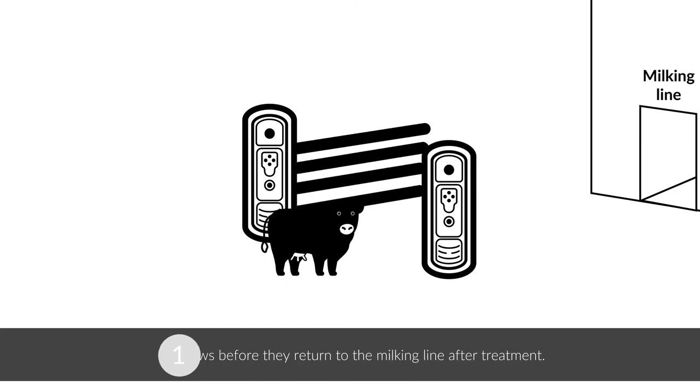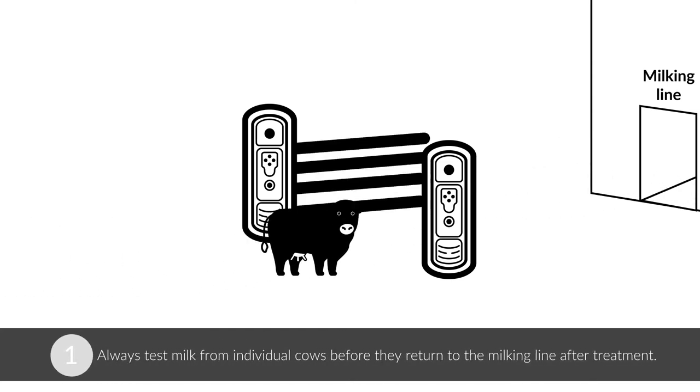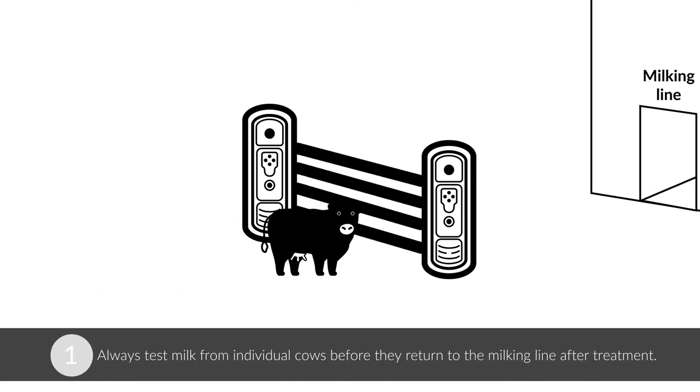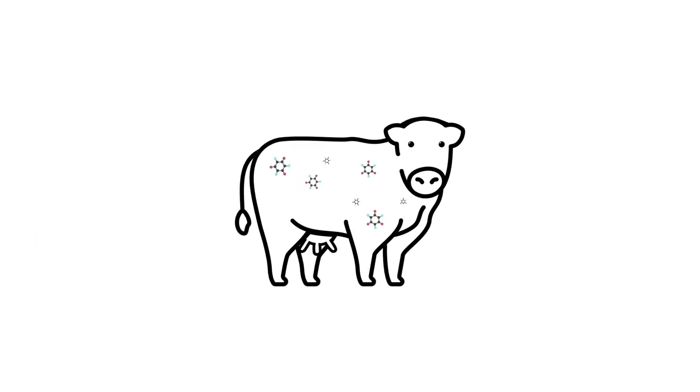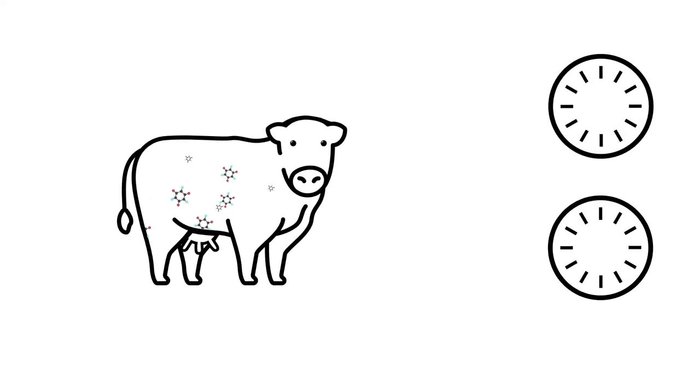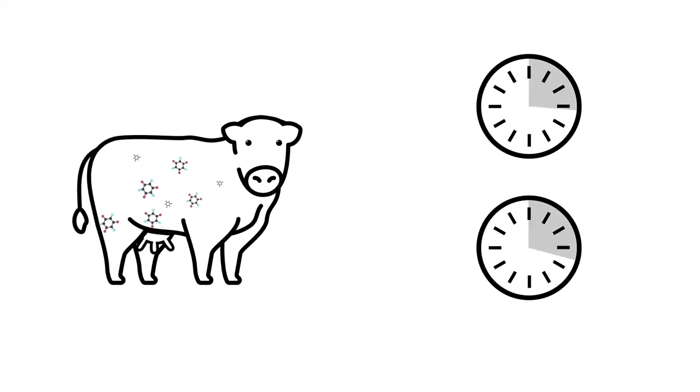First, always test milk from individual cows before they return to the milking line after treatment. Cows retain antibiotic drug residues for different periods of time. Many factors can affect the amount of time it takes for a cow to clear antibiotics from its system. For example, older cows retain antibiotics longer than younger cows and many times longer than the stated withhold times.